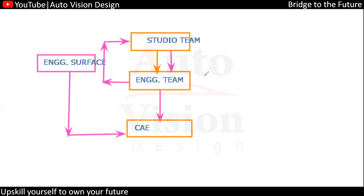Until we receive the surface we require, the cyclic process will continue and the revision count will keep increasing — revision one, revision two, revision three. Whatever revision becomes final, with that we can say we are going to release the surface for tooling.